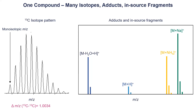What I want to highlight is that you always get redundant information about your compounds. When you get one ion, you also get multiple adducts. This is actually useful because you get more information confirming the same compound from different adduct forms.